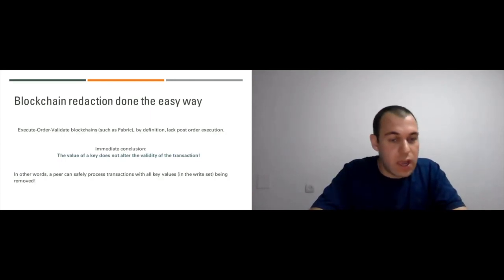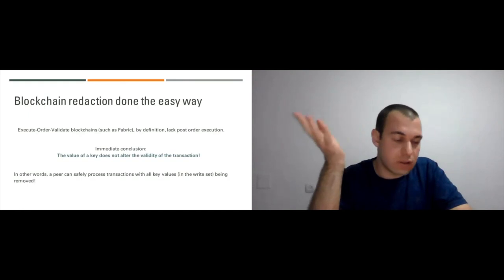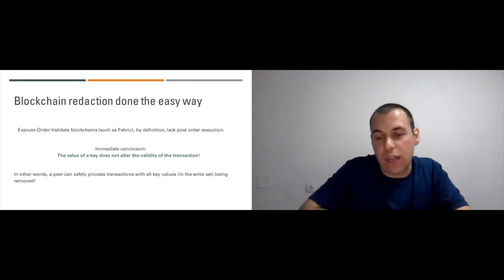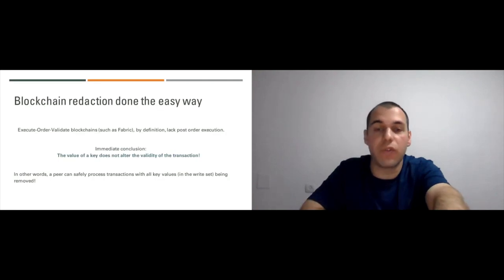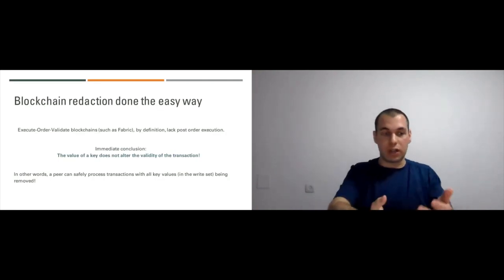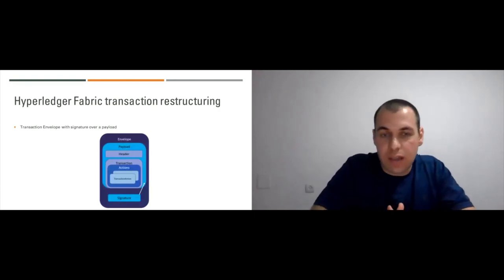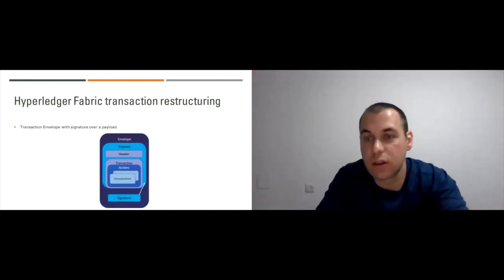When validating a transaction, a peer never looks at the value of a key — only at signatures or the MVCC version of that key. This means a peer that joins the network long after data has been redacted does not need that value at all to determine the validity of a transaction, just as other peers that processed it before the redaction.